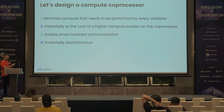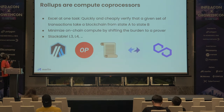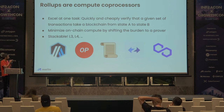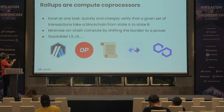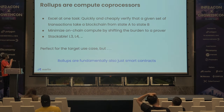This might seem familiar to you, because what I just described is what rollups are. They excel at literally one task, which is quickly and cheaply proving that a given set of transactions takes your blockchain from one state to another. And the way to minimize load on chain is actually by shifting the work into rollups. Your rollup is basically your co-processor today. And a nice property is that they are stackable — you can just have rollups on rollups across a whole network.